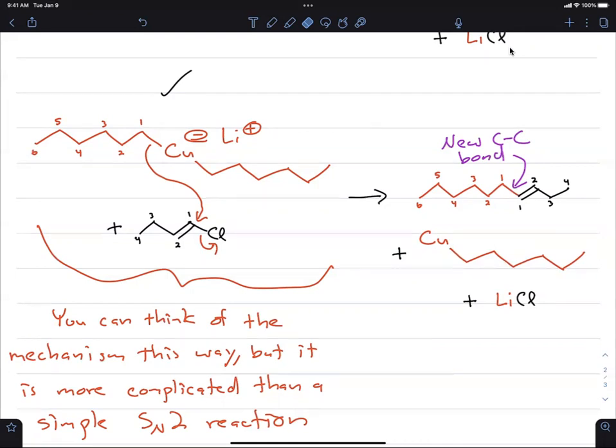But notice the big downside with Gilman reagents from a practical point of view is that one of your alkyl groups that you use to construct it stays on the copper. And so in your products, which you can't use anymore, you end up usually having to throw away that alkyl group. That's something we don't generally like to do in organic chemistry. Nevertheless, you can make some really cool products, and that's what we're going to focus on. Okay, I hope this was helpful.